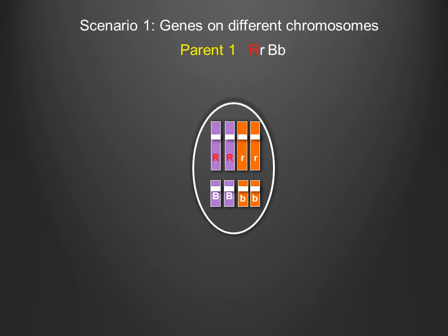First, we will determine what phenotypic proportions of offspring can be expected from a test cross if the two genes are on separate chromosomes. In a test cross, the homozygous recessive parent only contributes one type of gamete. Therefore, the phenotypes of the offspring are completely determined by the heterozygous parent. Depicted here are two chromosomes in the heterozygous parent: the larger chromosome carries the color gene, while the smaller chromosome carries the size gene. The homologues of each chromosome are depicted by purple and orange colors.